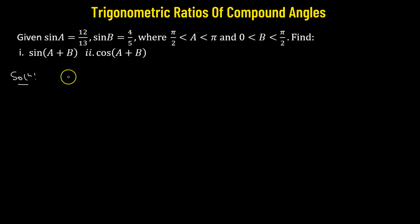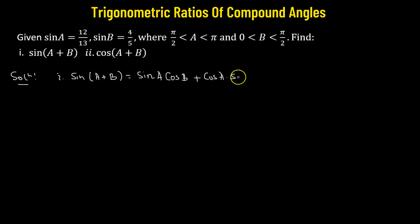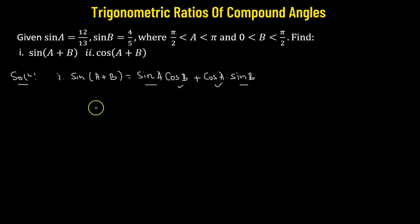Let's first try to find out the value of sine of a plus b. In order to find out this value, we need to first expand it. The expansion of sine(a+b) is sine a multiplied by cosine b plus cosine a multiplied by sine b. We have the values of sine a and sine b, so now we need to find out the values of cosine b and cosine a.